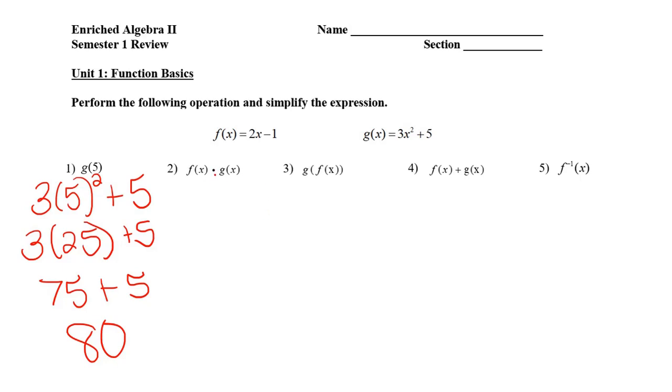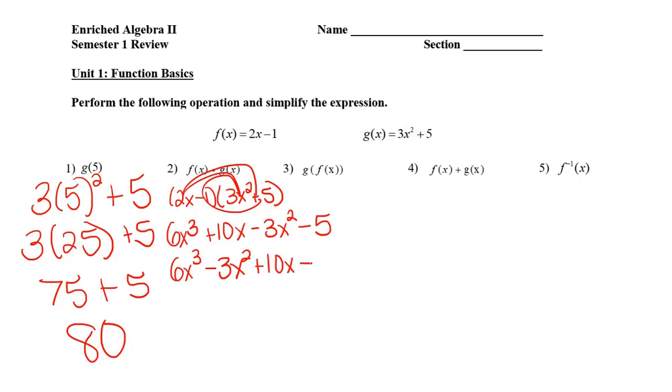Second problem, f times g, we want to multiply the two. So I'm going to go 2x minus 1 times 3x squared plus 5. So this is a beautiful foil job. I'm going to go 2x times 3x squared, that's going to give me 6x cubed. 2x times 5, which is 10x. Negative 1 times 3x squared, that's negative 3x squared. And negative 1 times 5, which is negative 5. I'm then going to put it in standard form, so that means exponents going down, descending in order. So 6x cubed is going to go first, followed by negative 3x squared, followed by positive 10x, followed by a negative 5.